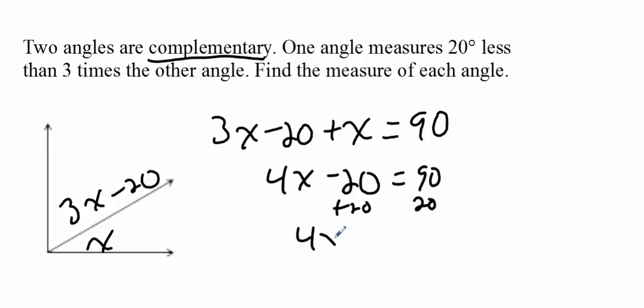So now you get 4X equals 110. Divide by 4. So what you get is X is 27.5.